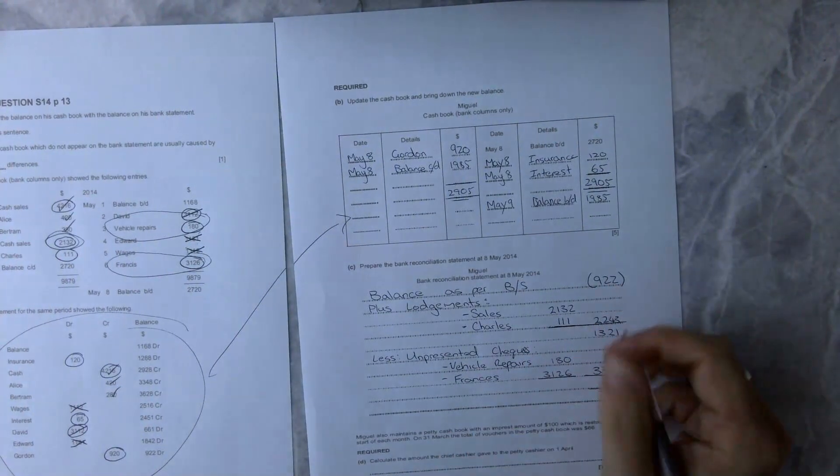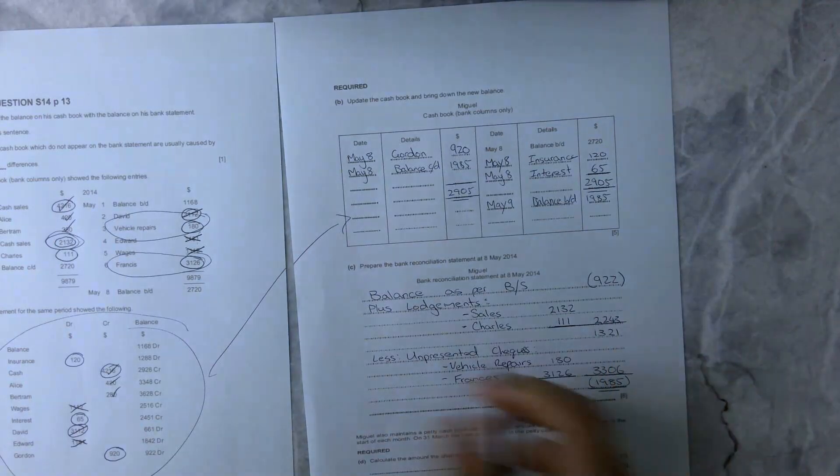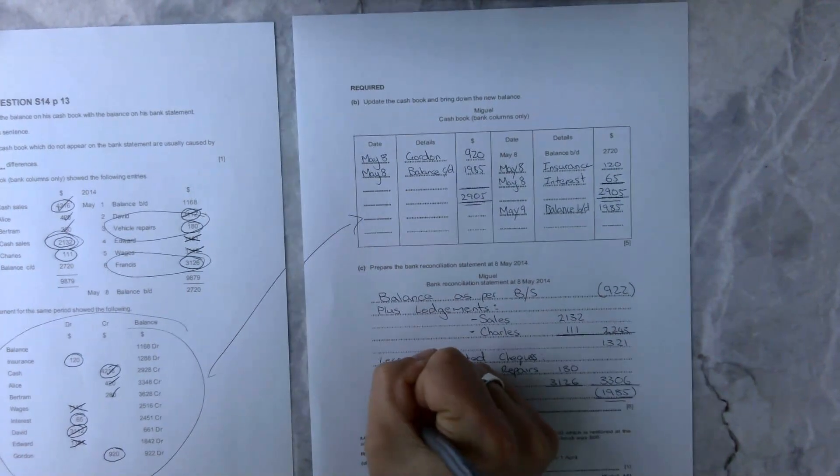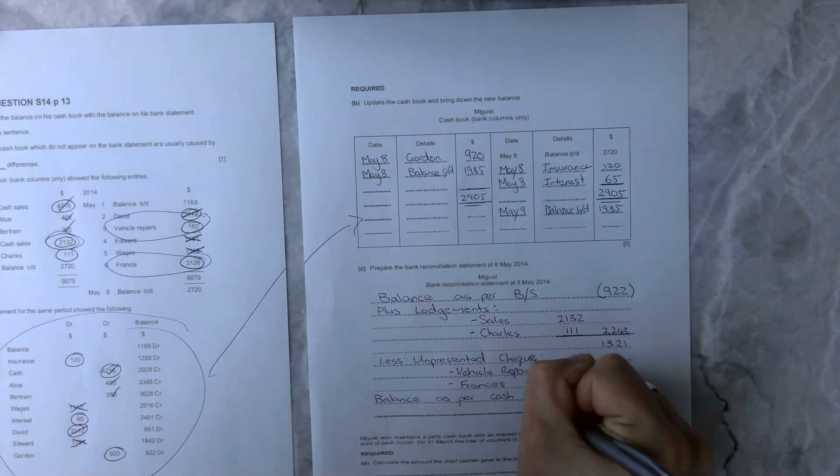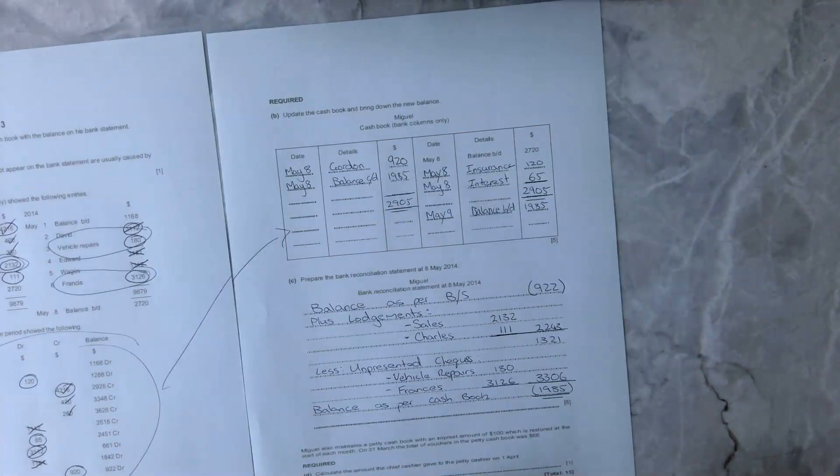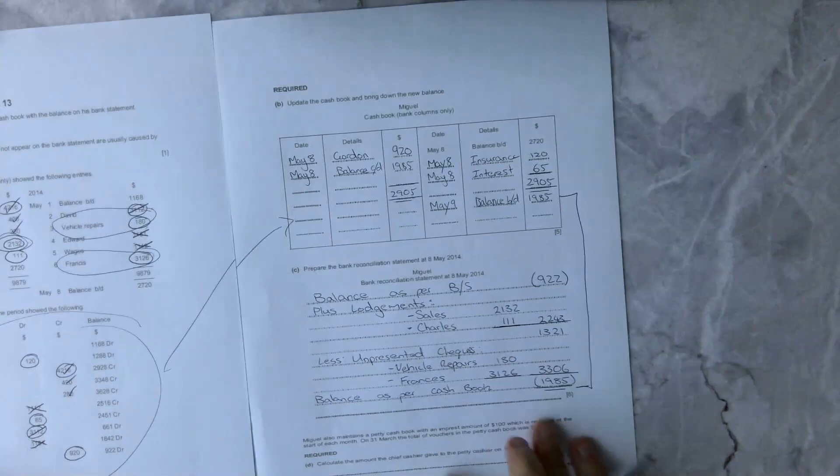That is going to be minus off our total, is going to give us a final balance of 1,985. And that is our balance as per cash book. As you can see, this figure here matches this figure here, and that's what we're wanting to do in this example.